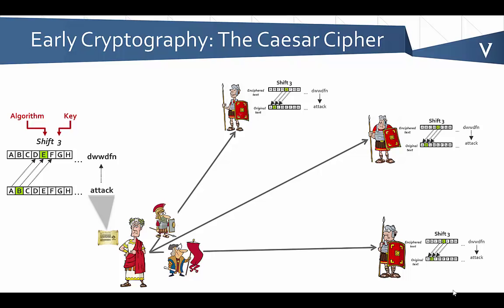If he had wanted to send different messages securely to different generals or different parties, he may have shifted three for one and six for another to make it more difficult for one or the other to intercept the other's messages. Today, if we fast forward, what we have are much more sophisticated algorithms that are doing mathematical transforms on the messages that need to be encrypted.